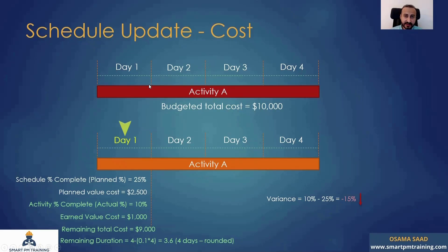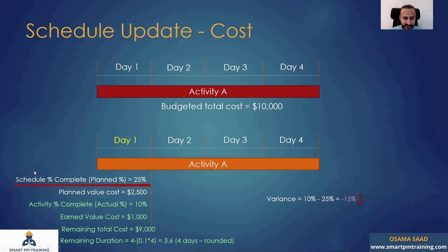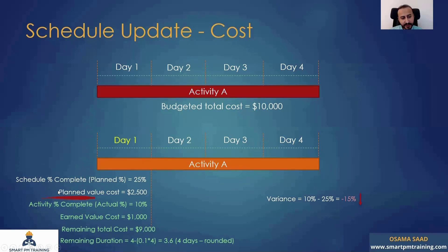After one day, I want to check the progress of that activity. You want to refer to the schedule percentage complete. If you search for this column, you're going to have schedule percentage complete or planned percentage. It's 25% because one day elapsed out of four. So 25% should have been completed. The planned value cost is 25% times $10,000 total cost, so I should have done work worth $2,500.